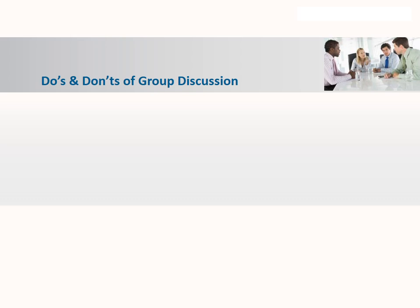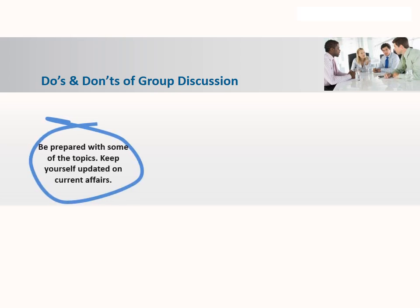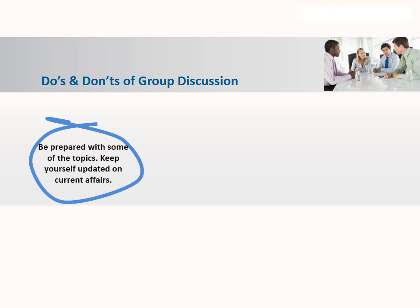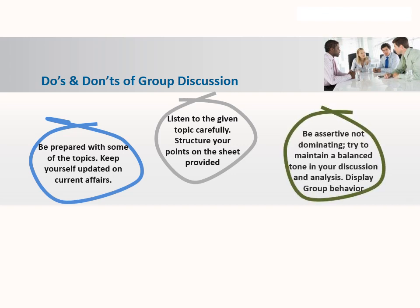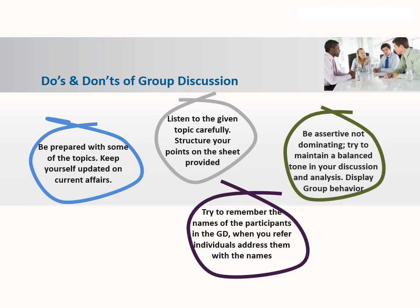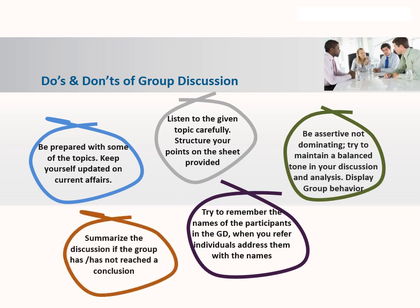What are the do's and don'ts of group discussion? Be prepared with topics pertaining to current affairs. Listen to the given topic carefully and structure your points on the sheet provided — you can use your notepad and pen. If you are comfortable with the topic, be the initiator. If you don't have much information, wait a couple of minutes, then articulate your thoughts and speak out. Be assertive, not dominating. Shouting, screaming, and dominating will be viewed very negatively and will have an adverse impact on group behavior. Maintain a balanced tone in your discussion, analysis, and display of group behaviors.